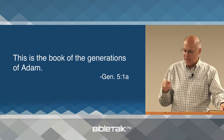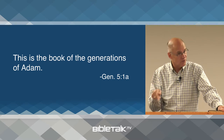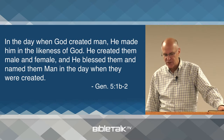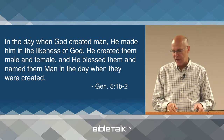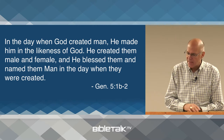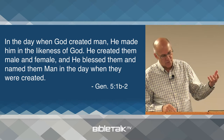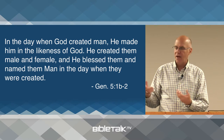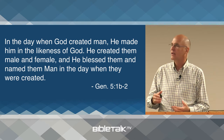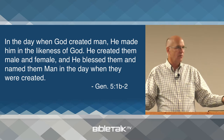In the next section we begin reading a section prepared by another writer — Noah. Let's read 5:1b and 2: 'In the day when God created man, He made him in the likeness of God. He created them male and female, and He blessed them and named them man in the day when they were created.' So Noah begins by summarizing the life of Adam from his creation in the garden, providing a direct link between what happened in the past and what the present writer is going to write about.